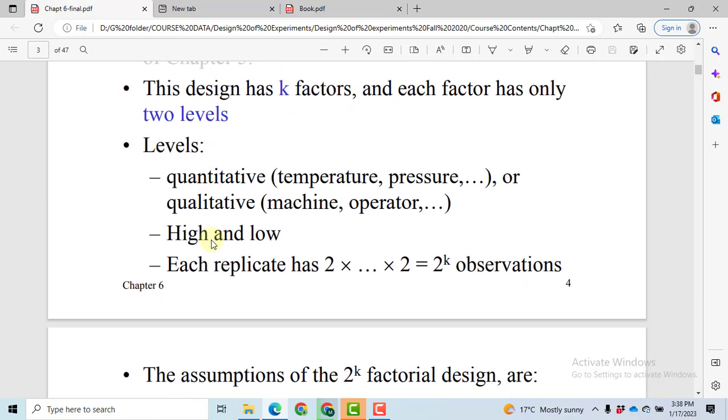These levels can be quantitative, just like temperature 100 degree centigrade and 200 degree centigrade, pressure 10 psi, 20 psi, or these levels can be qualitative like machine 1 and 2, operator 1 and 2. These levels can be high and low.